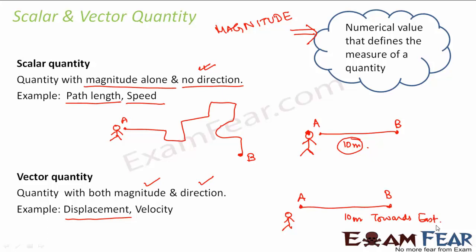Distance is a scalar quantity; displacement is a vector quantity — that is the first difference. The next difference is that for distance, the nature of the path followed by the object matters. For displacement, only the initial and final points matter; the nature of the path does not matter at all. With this, we conclude the topic on path length and displacement.